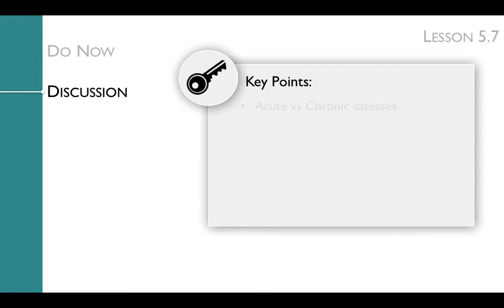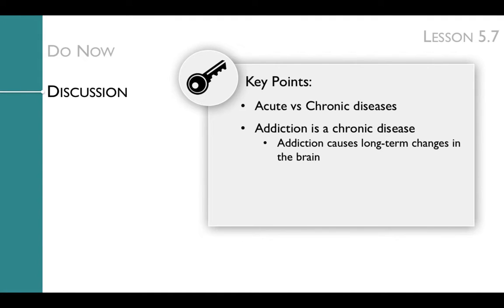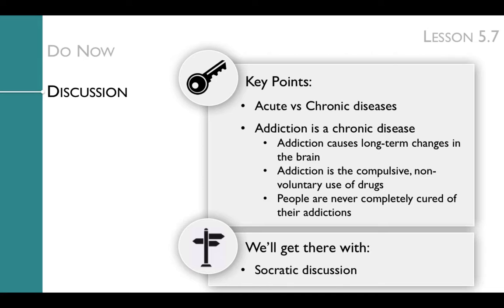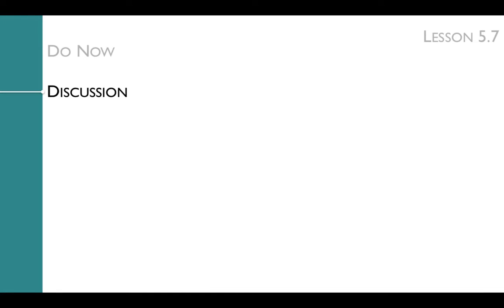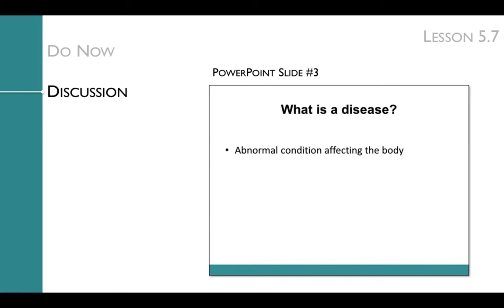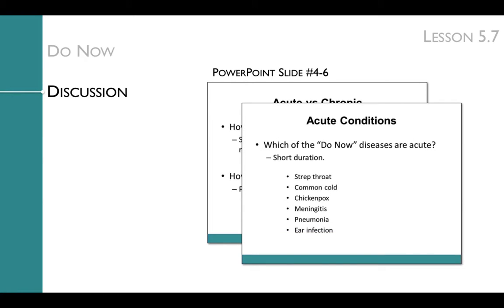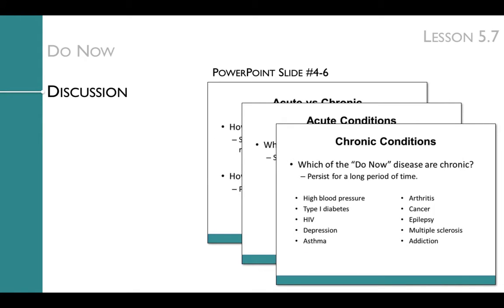The key points of the discussion are acute versus chronic diseases, and that addiction is a chronic disease because addiction causes long-term changes in the brain, addiction is compulsive non-voluntary use of drugs, and people are never completely cured of their addictions. The first part of the discussion reviews the Do Now by discussing the definition of disease — an abnormal condition affecting the body — then acute versus chronic diseases. Acute diseases have short duration but may be very intense and have a rapid onset; chronic diseases persist over a long period of time. These slides are all animated so you can ask students for their answers before displaying those that appear on the slides.